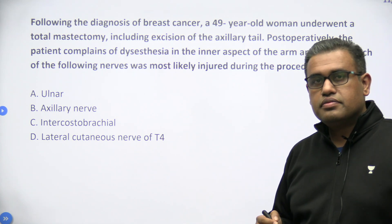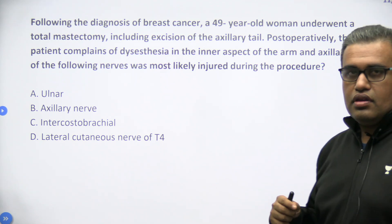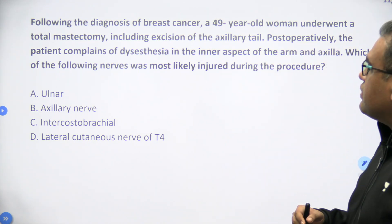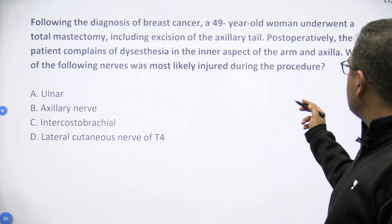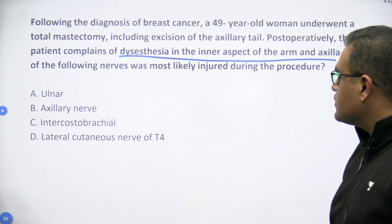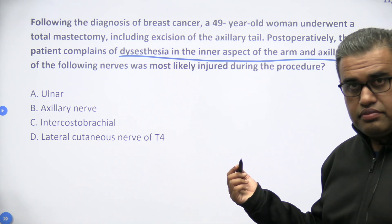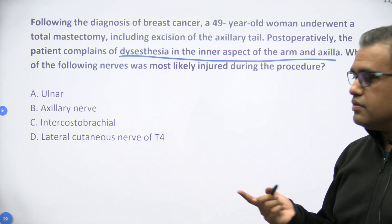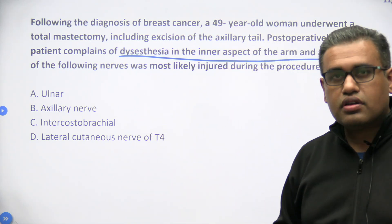Following a diagnosis of breast cancer, a 49-year-old lady underwent a total mastectomy including excision of the axillary tail. Post-op, the patient complains of dysesthesia — that is altered sensation — in the inner aspect of the arm and axilla. Which of the following nerves was most likely injured during the procedure? Options are: long thoracic nerve, axillary nerve, intercostal brachial nerve, or the lateral cutaneous nerve of T4.